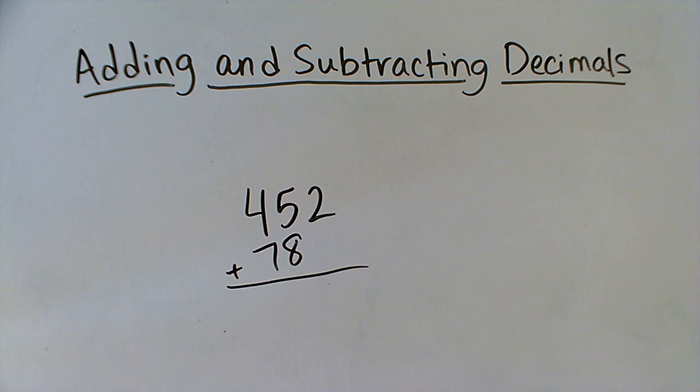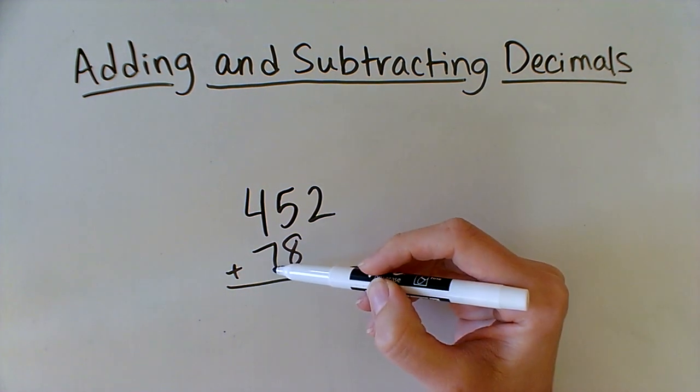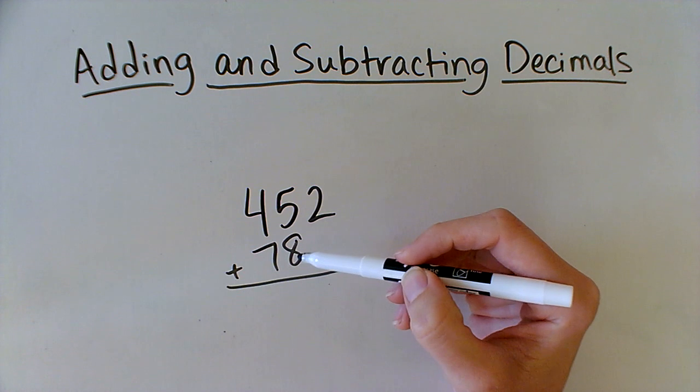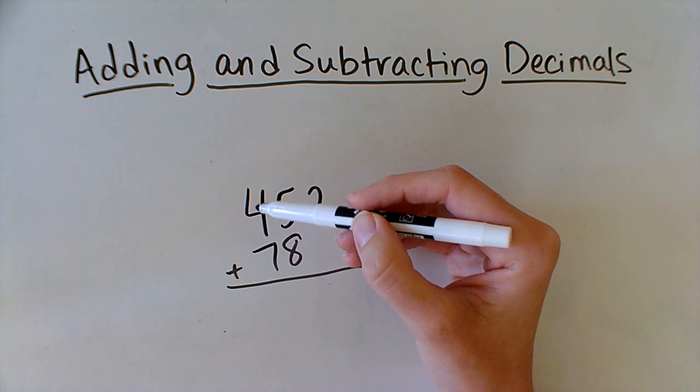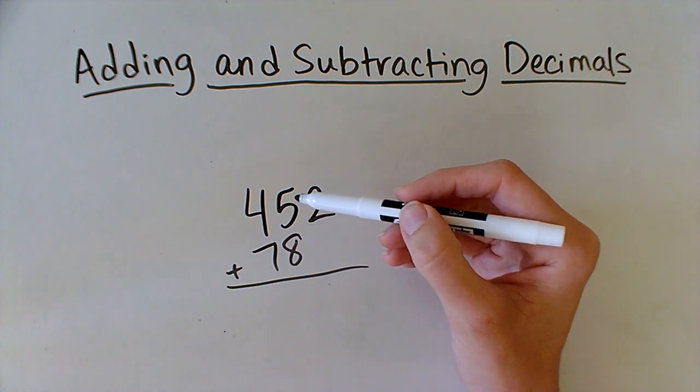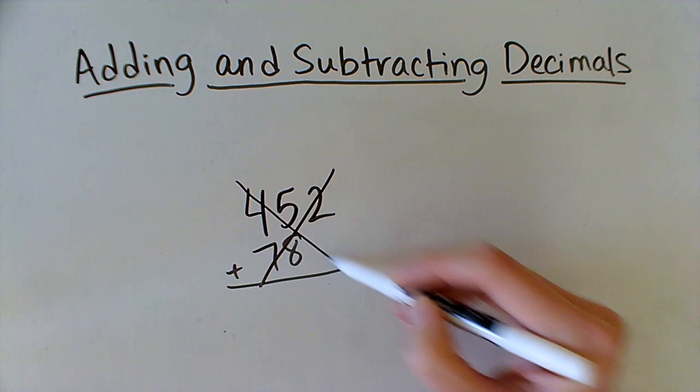This is a common mistake that students make. In this problem, the 7 is in the tens place and the 8 is in the ones place, but I have the 7 lined up under the hundreds place and the 8 under the tens place. This isn't going to work.